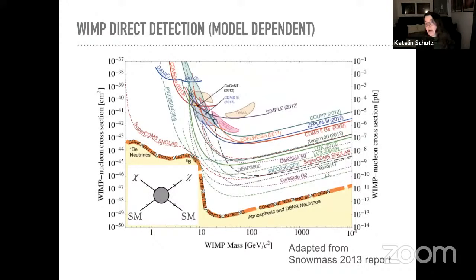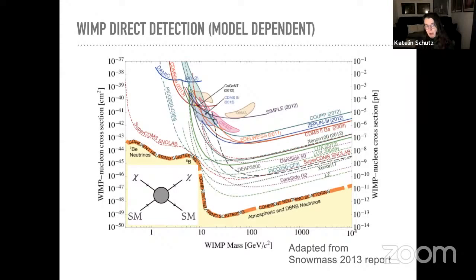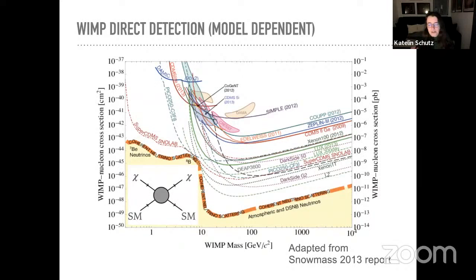Direct detection involves dark matter scattering with atomic nuclei, which is quite different from dark matter annihilation in the early universe. This means you get a range of predictions for different theories of freeze-out, and a null detection in these experiments doesn't say anything robust about whether freeze-out did or did not occur.